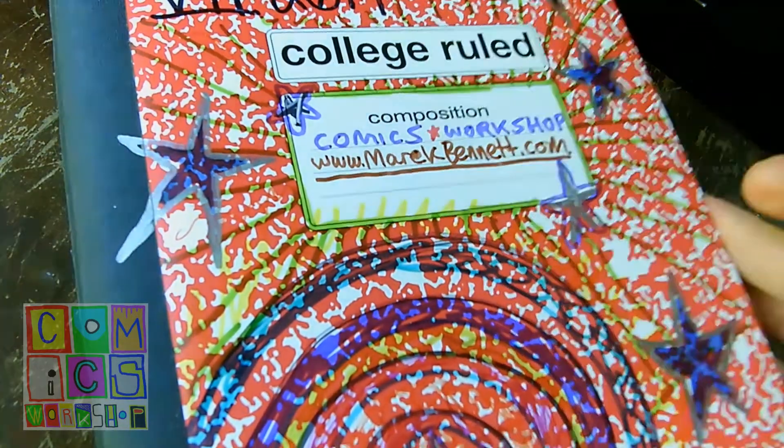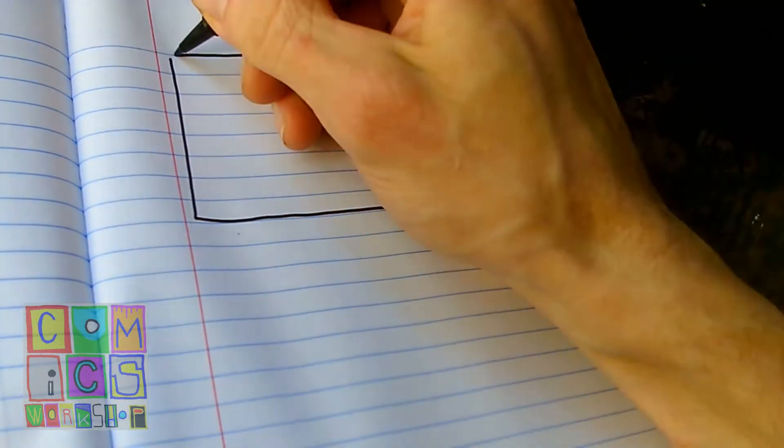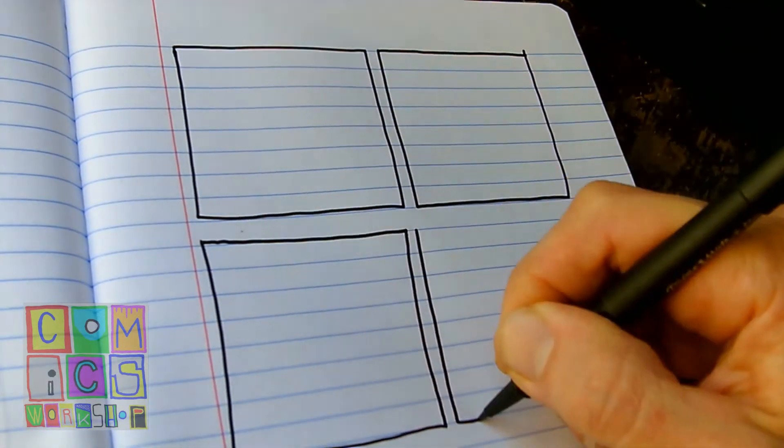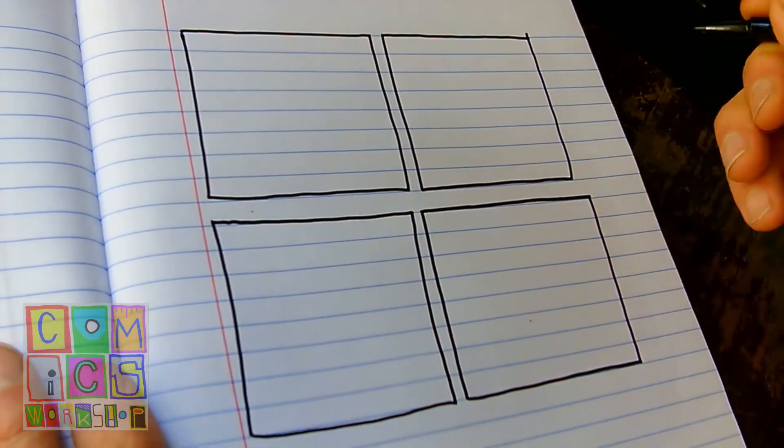So today we're just going to take a pen and open up a notebook to a blank page and give ourselves four boxes, four panels to put our thoughts down in. I'm just going to sort of follow my thoughts through this and see what happens.